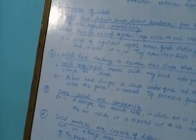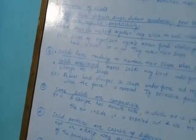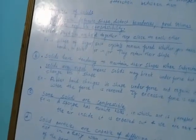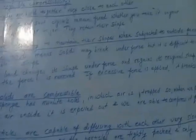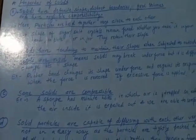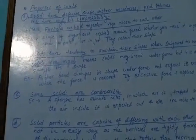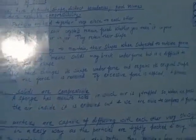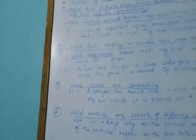The second property of solid is that solids have a tendency to maintain their shapes even when subjected to outside forces. Even though outside forces are applied to the solids, they do not change their shapes. So solids are said to be rigid.